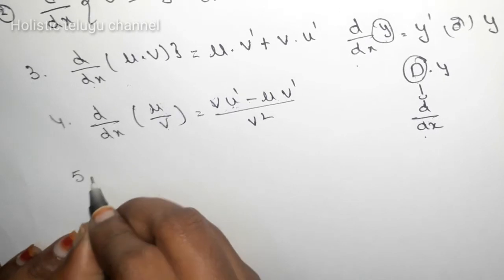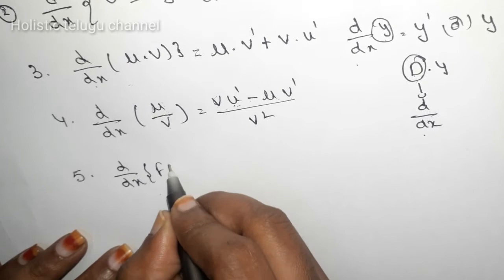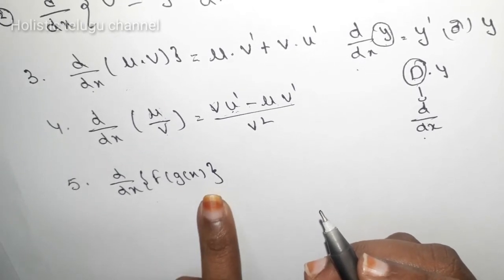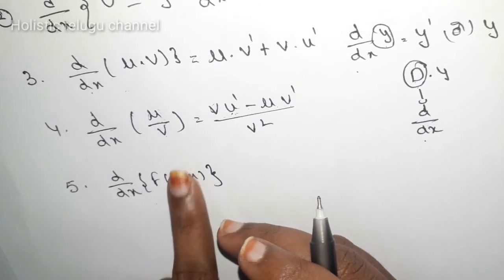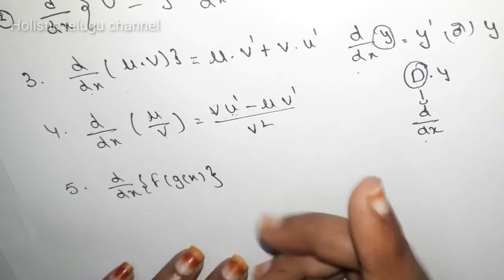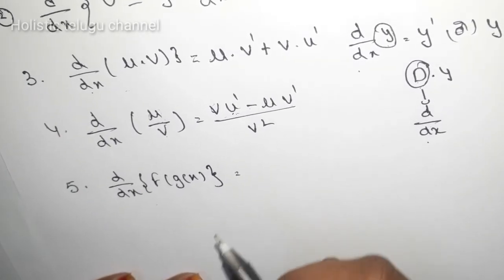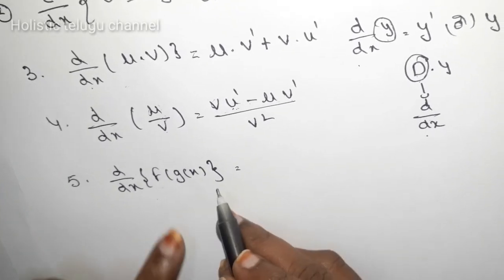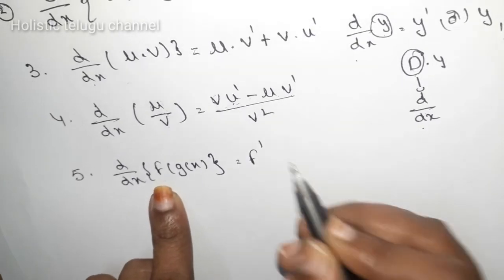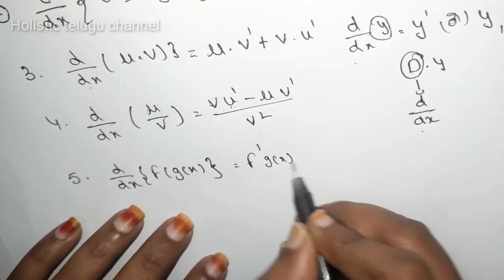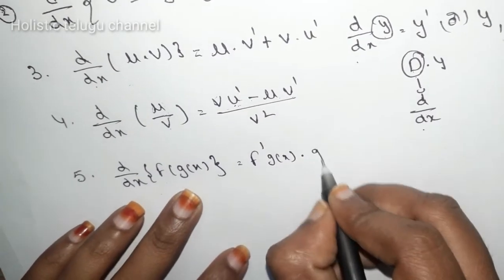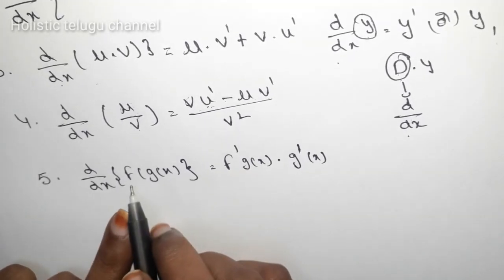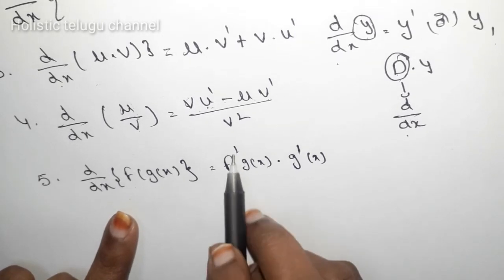The fifth property is d by dx of f of g of x. Here we have a function inside a function — f of g of x. So, d by dx of f(g(x)) means we first differentiate the outer function f, then multiply by the derivative of the inner function g of x.